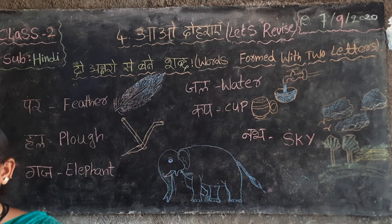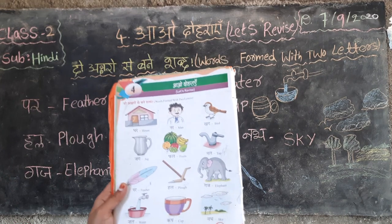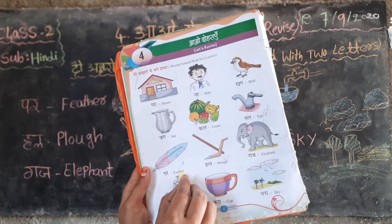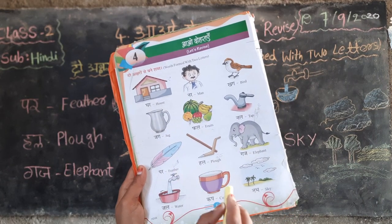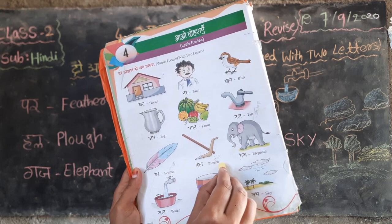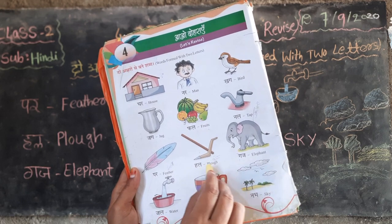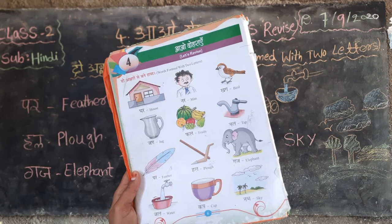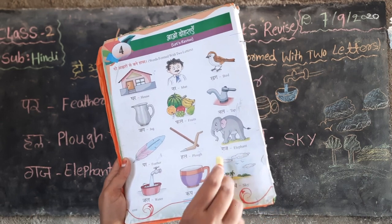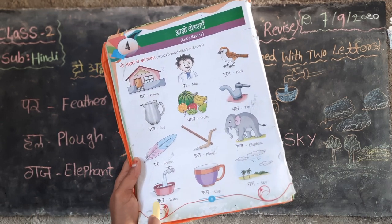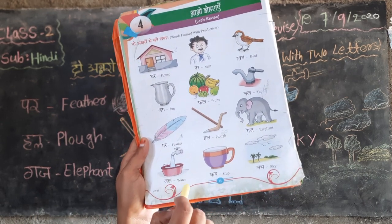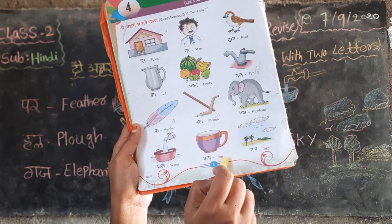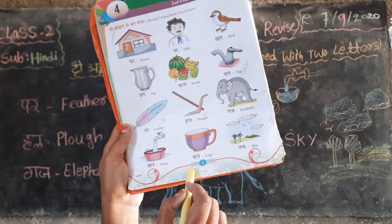See this book. Perk — feather. Hull — P-L-O-U-G-H. Gaj — elephant. Gel — W-A-T-E-R. Cup — cup. Nub — S-K-Y.